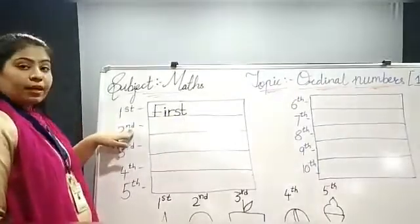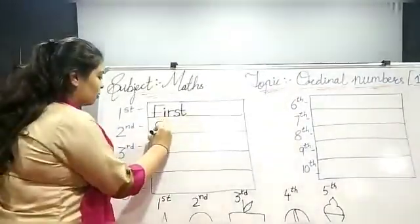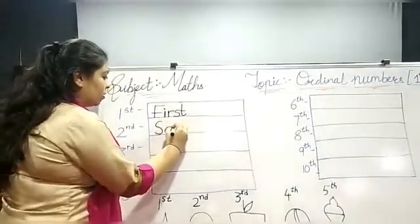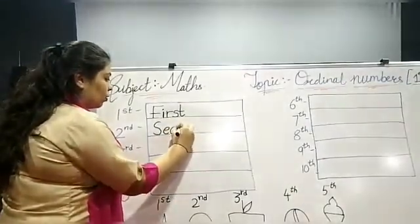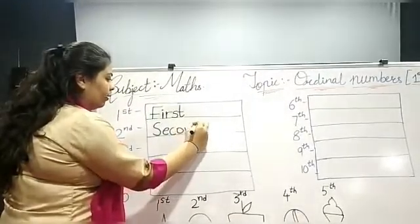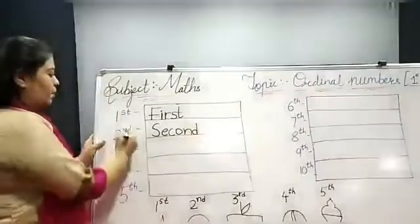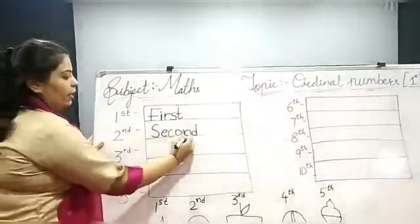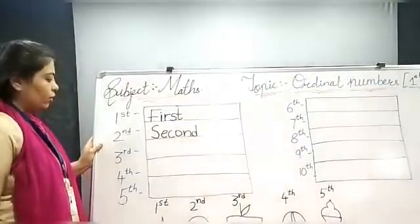Now, 2nd. So, S, E, C, O, N, D — Second. यहाँ पे 2nd में क्या है? N, D. And यहाँ पे last में क्या है? N, D.